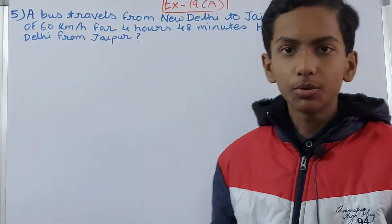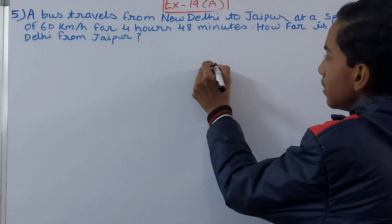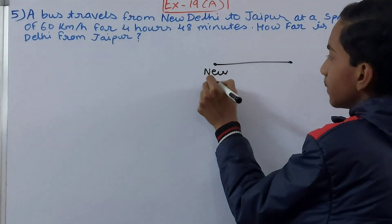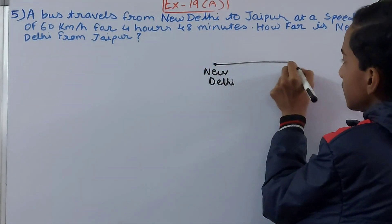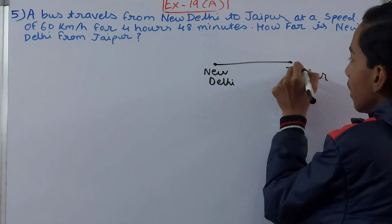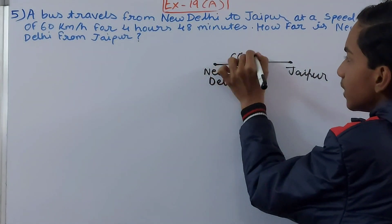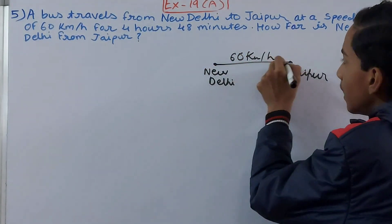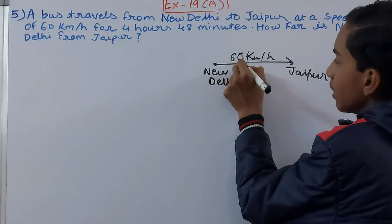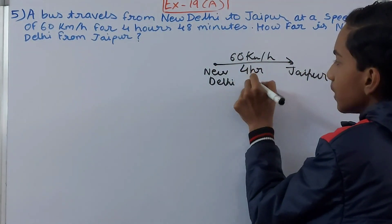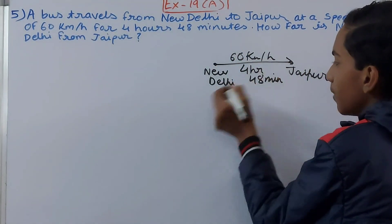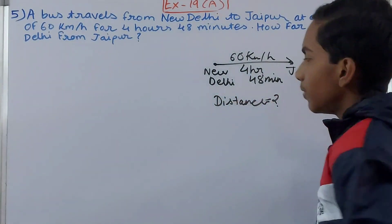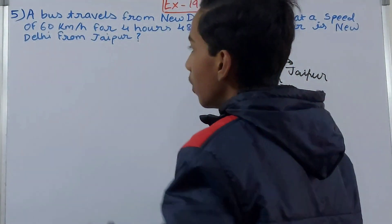The time given is 4 hours 48 minutes, and it reaches Jaipur from Delhi in that time. We need to find the distance from New Delhi to Jaipur. So suppose this is New Delhi and up here is Jaipur — the bus is going from here to here. The speed is 60 kilometers per hour, and the time taken is 4 hours 48 minutes. We have to find the distance between New Delhi and Jaipur.